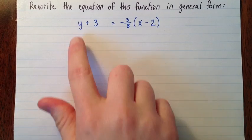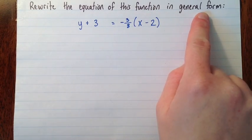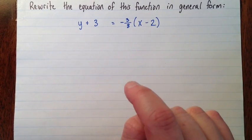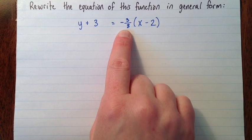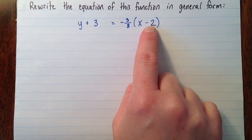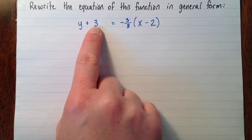So here a question asks us to rewrite the equation of this function in general form. And if we look at that, we see we've got slope point form. Here's the slope, negative 3 over 8, and this goes through the point plus 2, negative 3.